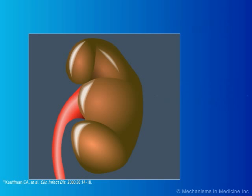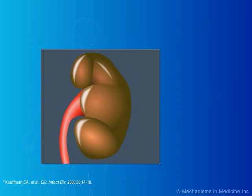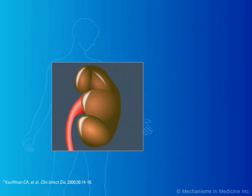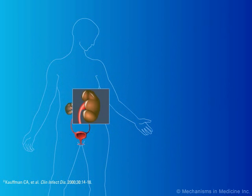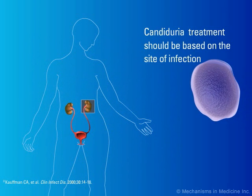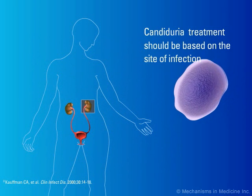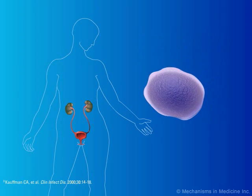Urinary candidiasis rarely progresses to candidemia unless there is a mitigating circumstance such as urinary obstruction. Treatment stratification based on the site of infection is necessary for optimal management.